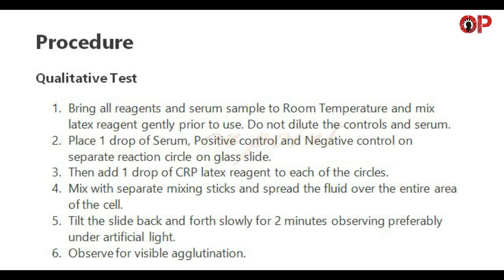Procedure — Qualitative test: 1. Bring all reagents and serum sample to room temperature and mix latex reagent gently prior to use. Do not dilute the controls and serum. 2. Place one drop of serum, positive control, and negative control on separate reaction circles on a glass slide. 3. Then add one drop of CRP latex reagent to each of the circles. 4. Mix with separate mixing sticks and spread the fluid over the entire area of the cell.